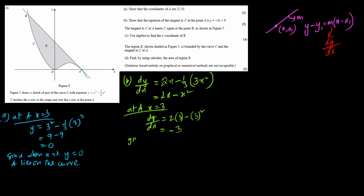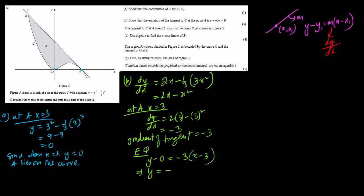The gradient of the tangent at point A is minus 3. The equation becomes y minus 0 equals minus 3 times (x minus 3), which simplifies to y equals minus 3x plus 9. That has been shown.